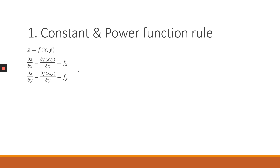In the same manner, from the z function we can also find the partial derivative of z with respect to y. Looking at an example, let's say we have a z function given as 3x³y². We can see that both x and y are multiplying each other together with the constant.